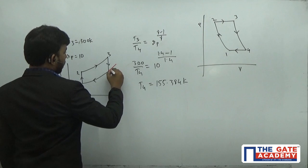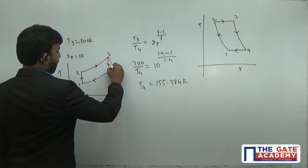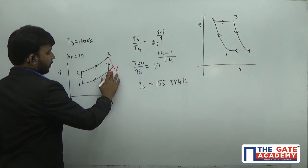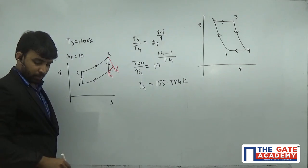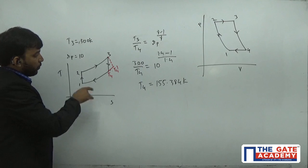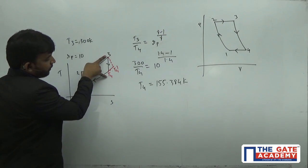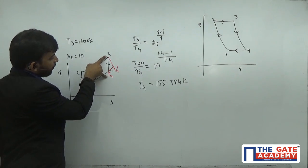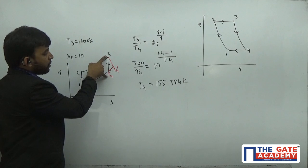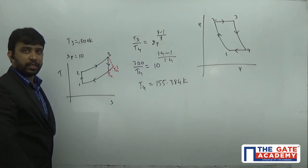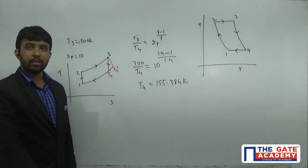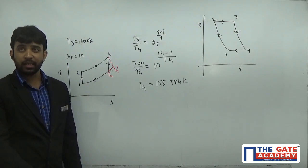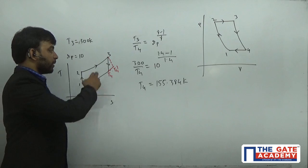He is saying that 3 to 4 is not an isentropic process. Its efficiency is 90%. So T4 dash will be somewhere here, T4 is somewhere here. T4 dash is slightly more than T4. Work done by the turbine depends on enthalpy of state 3 and state 4 if it is an isentropic process. Since its efficiency is 90%, work done depends on state 3 and state 4 dash. You can see T3 and T4 are very far compared to T3 and T4 dash. Work done by the turbine in actual process, the 3 to 4 dash process, is less compared to the work done during an ideal process.